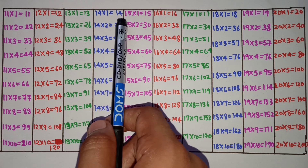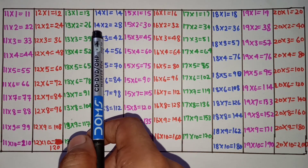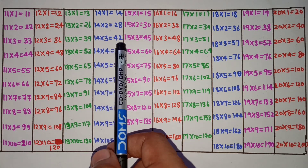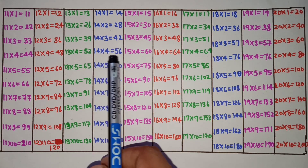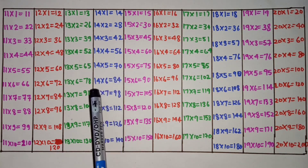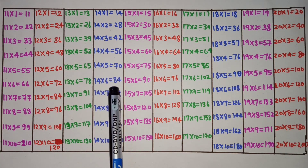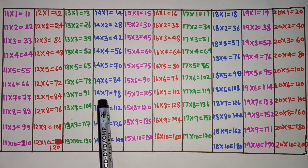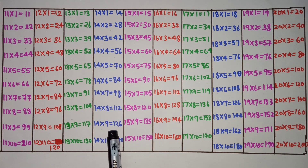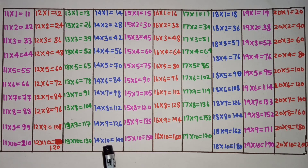14×1 is 14, 14×2 is 28, 14×3 is 42, 14×4 is 56, 14×5 is 70, 14×6 is 84, 14×7 is 98, 14×8 is 112, 14×9 is 126, 14×10 is 140.